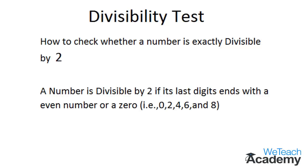A number is divisible by 2 if its last digit ends with an even number or a zero. That is, the number should always have a last digit as 0, 2, 4, 6, or 8. Now let me explain the concept with the help of a few examples.